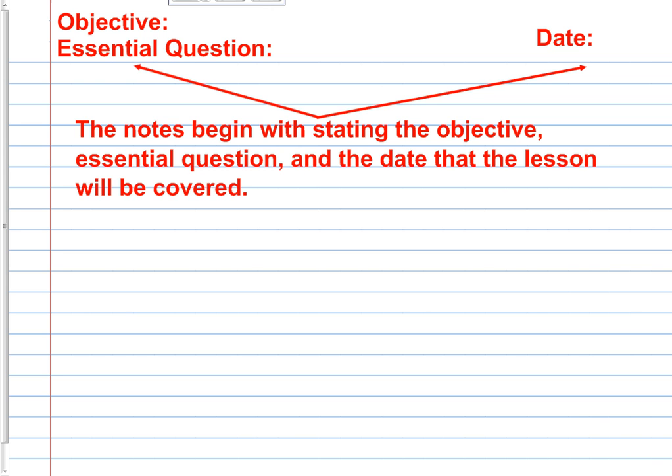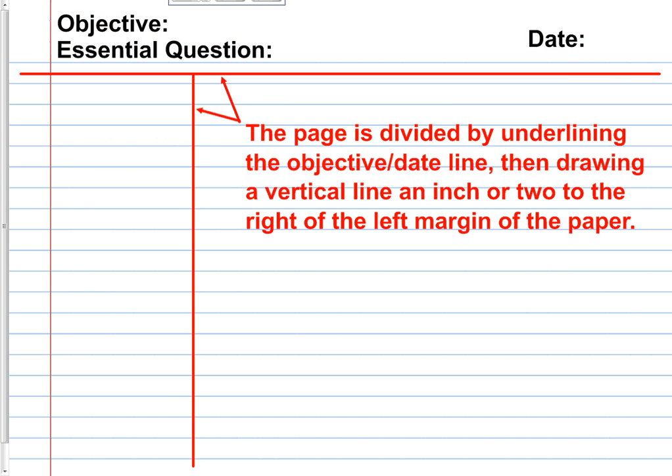So you're required to copy down the objective and the essential question. So whatever those are on the video, you will write those down where it says objective and essential question. Also, you're going to write down the date just in case your notes get out of order for some strange reason. Throughout the course of the year, you will be able to put all of the information in order as far as date is concerned.